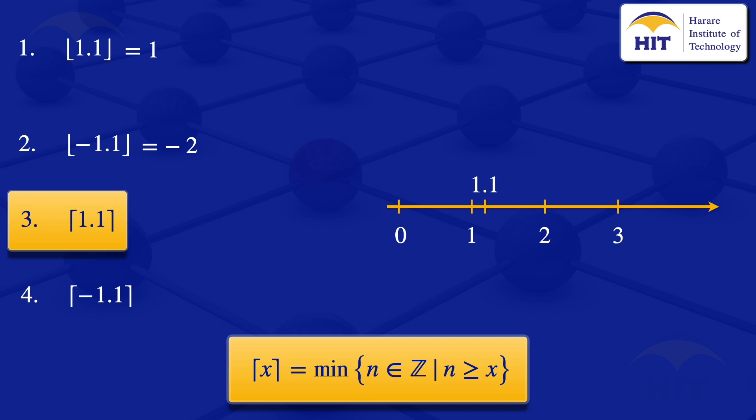The integer directly to the right of 1.1 is equal to 2, so the ceiling value of 1.1 is equal to 2.